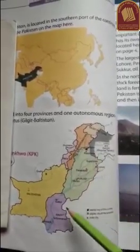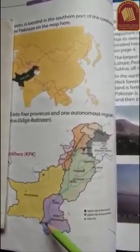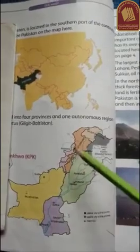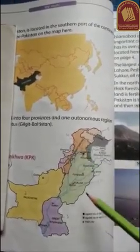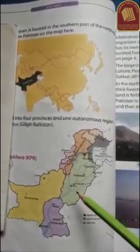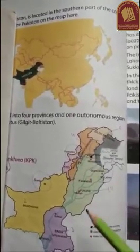If you look at this map, you can easily find cities like Karachi, Quetta, Lahore, Peshawar, Faisalabad, Multan, and many other cities. You can easily find all of them on this map on page 4.